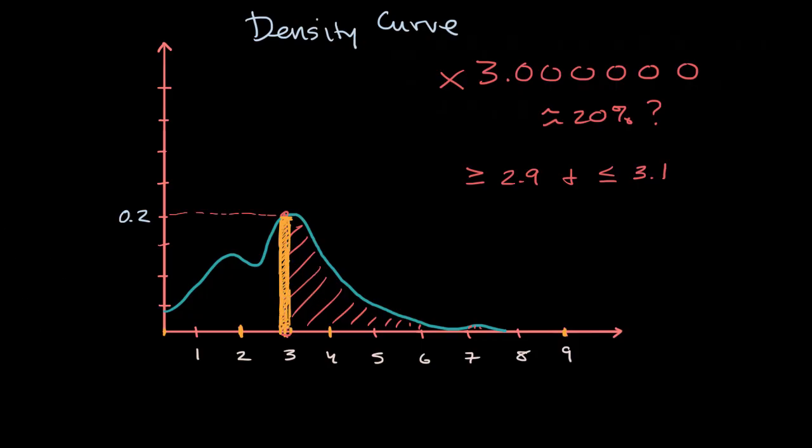And so it would be roughly the size of this yellow area that I'm shading in right over here. And we can approximate it with a rectangle, even though the top of this curve isn't flat. But we could say look, it's approximately like a rectangle that is 0.2 high. And what's the width? The width here, if we're going from 2.9 to 3.1, the width is going to be 0.2 wide.